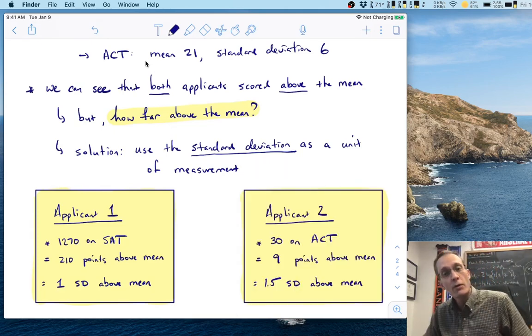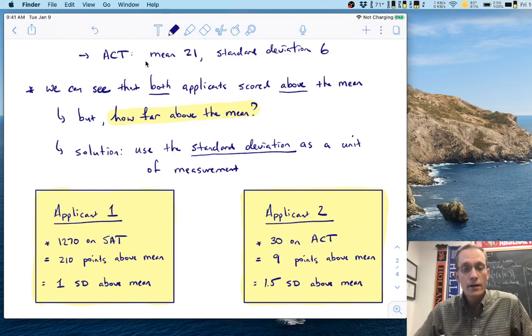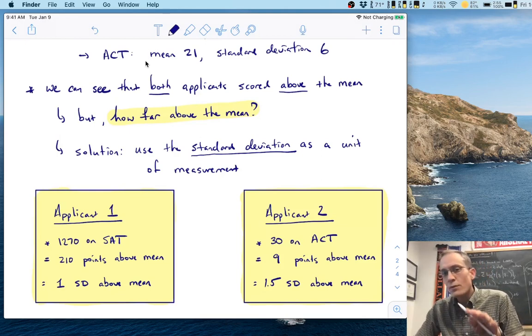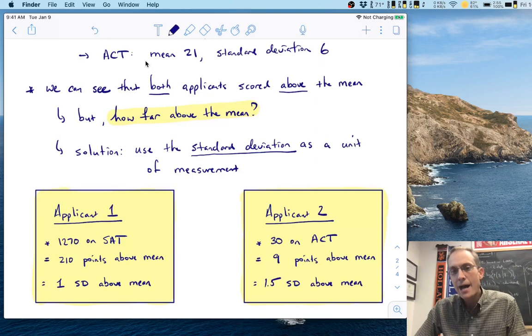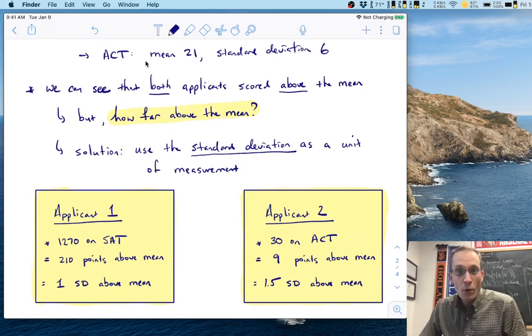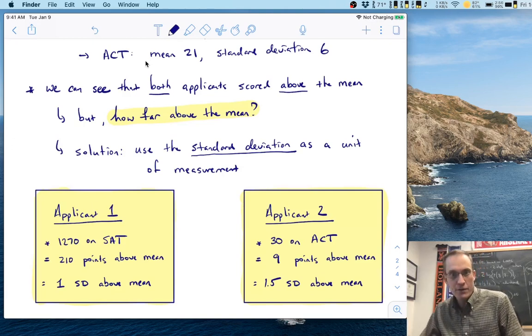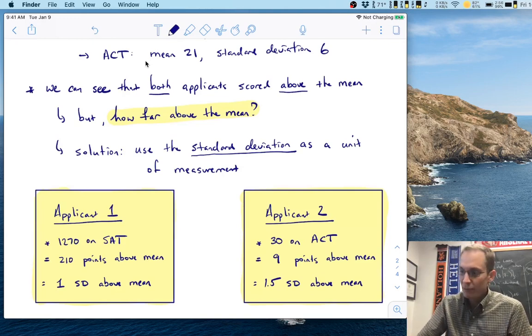If we use the standard deviation as a measurement tool or a yardstick, this is not a yardstick, but you get the point, then we can use that to say this person scored one standard deviation above the mean. Now by itself, that might not be very useful, but consider also looking simultaneously at applicant two. Applicant two, we know they scored a 30 on the ACT. Now the mean was 21. So that means that applicant two scored nine points above the mean.